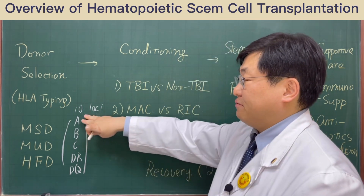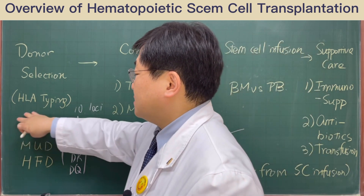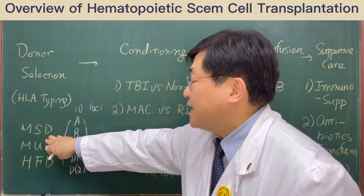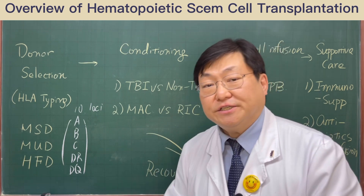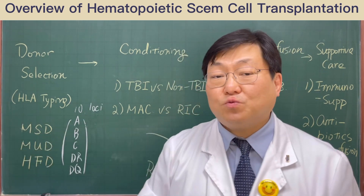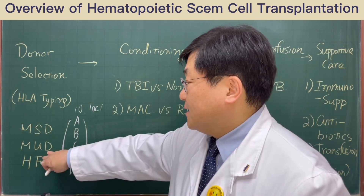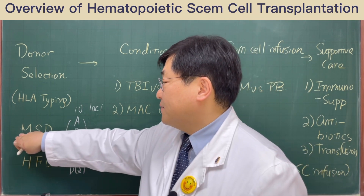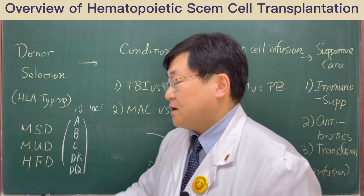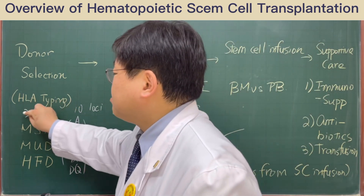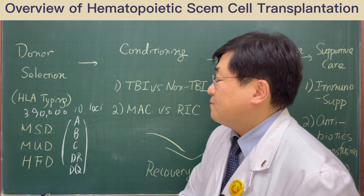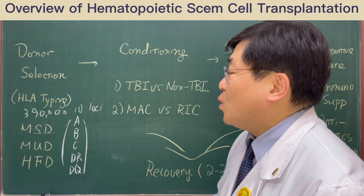After checking the patient's HLA type, we need to evaluate the matched sibling donor first. The matched sibling donor means any sibling — a brother or sister — who has the same HLA type. You can find a matched sibling donor with a chance of 25% if you have a sibling.